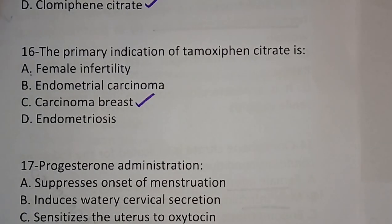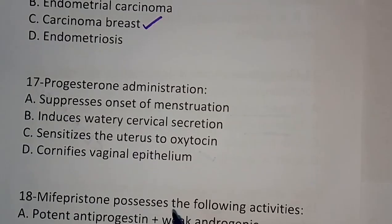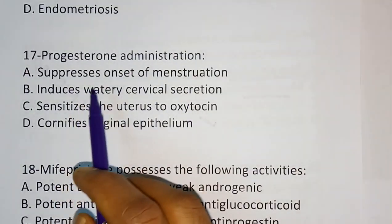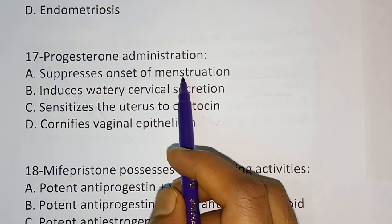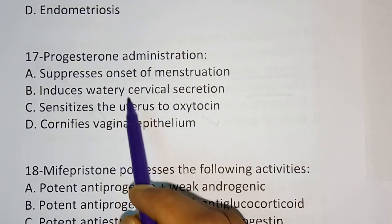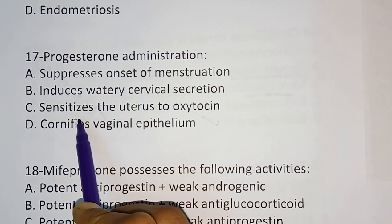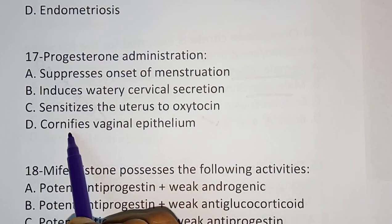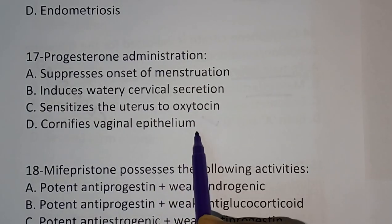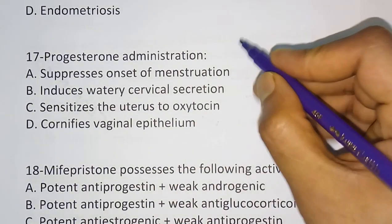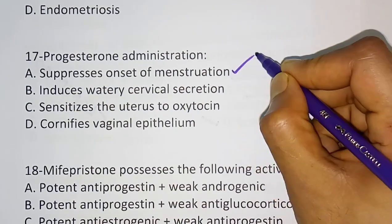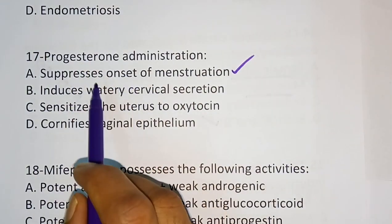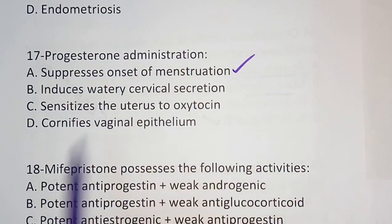Question number 17: Progesterone administration — which effect does it produce? Options: suppresses onset of menstruation, induces watery cervical secretion, sensitizes the uterus to oxytocin, cornifies vaginal epithelium. The correct answer is it suppresses the onset of menstruation. When you take progesterone, it will suppress the onset of menstruation.